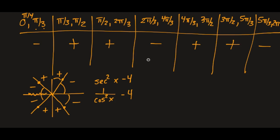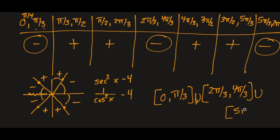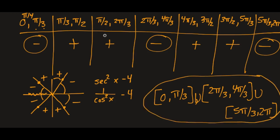We were looking for less than or equal to zero, so we want the negative sections. The answer is 0 to pi over 3, union 2 pi over 3 to 4 pi over 3, union 5 pi over 3 to 2 pi. We didn't need open brackets at the undefined points because we were looking for less than or equal to zero. This example was more complicated to analyze, but the approach is similar: think carefully with the unit circle, use sines and cosines, and set up a sign chart. Just a few more steps than a trig equation, but a similar process.